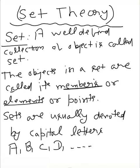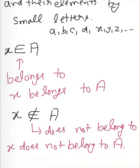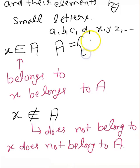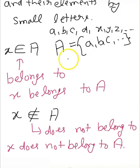Sets are usually denoted by capital letters, and the members are denoted by small letters like a, b, c, d, x, y, or anything like that. So if we say there is set A, we can write it as A = {a, b, c, ...}, where the set is denoted by capital A and its elements are denoted by small letters.